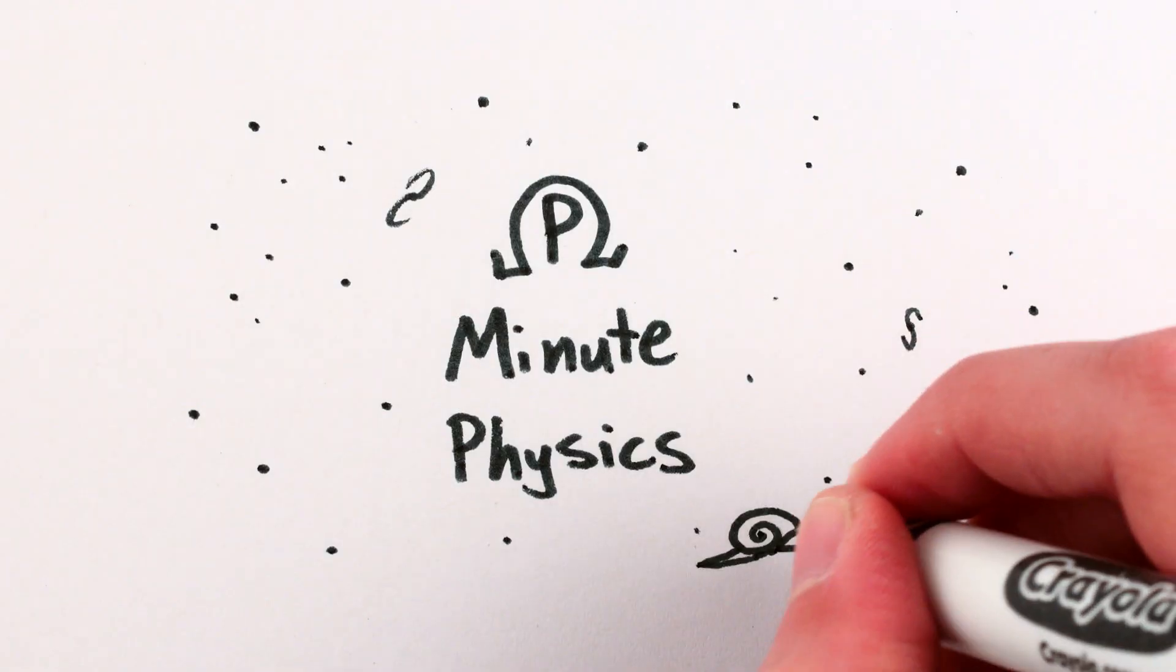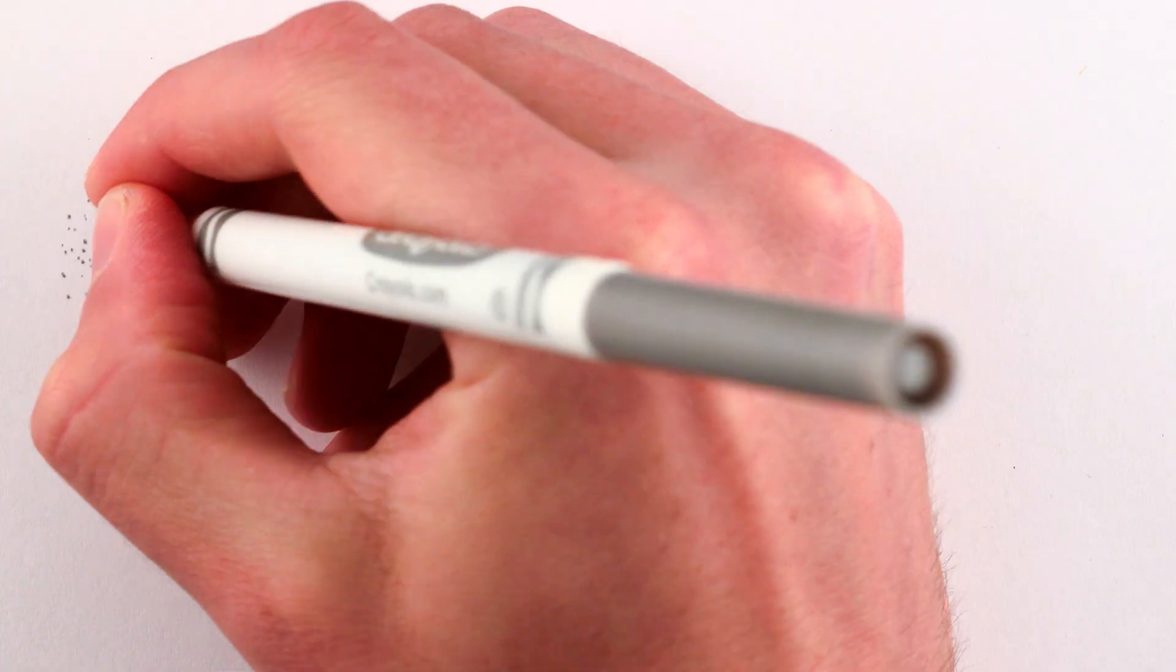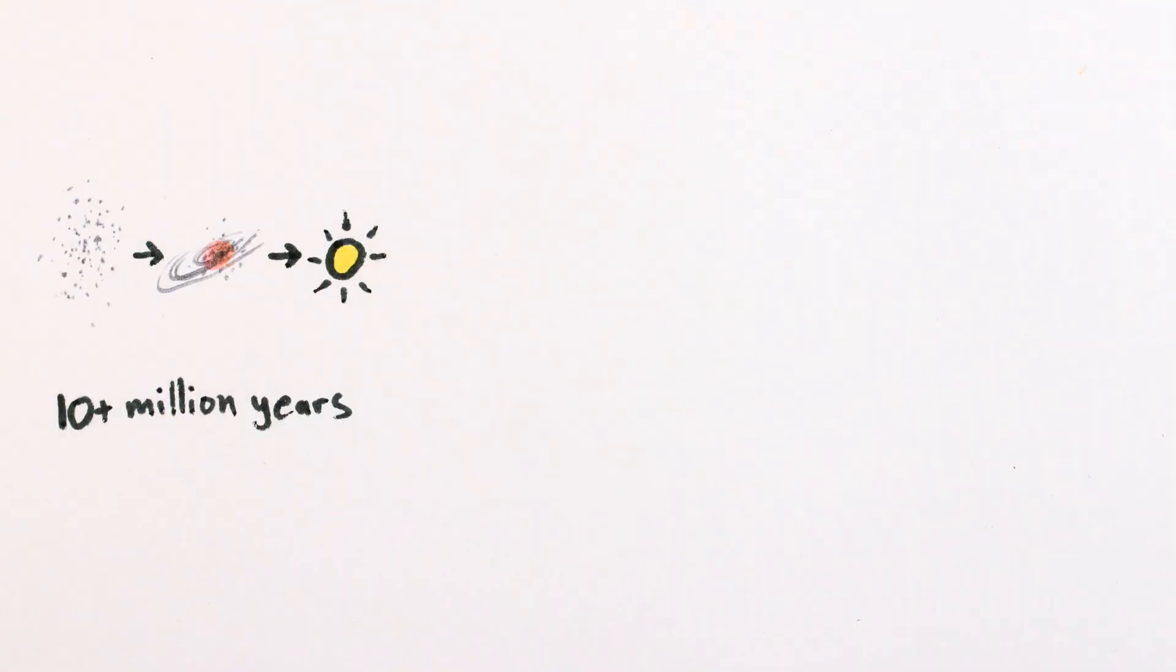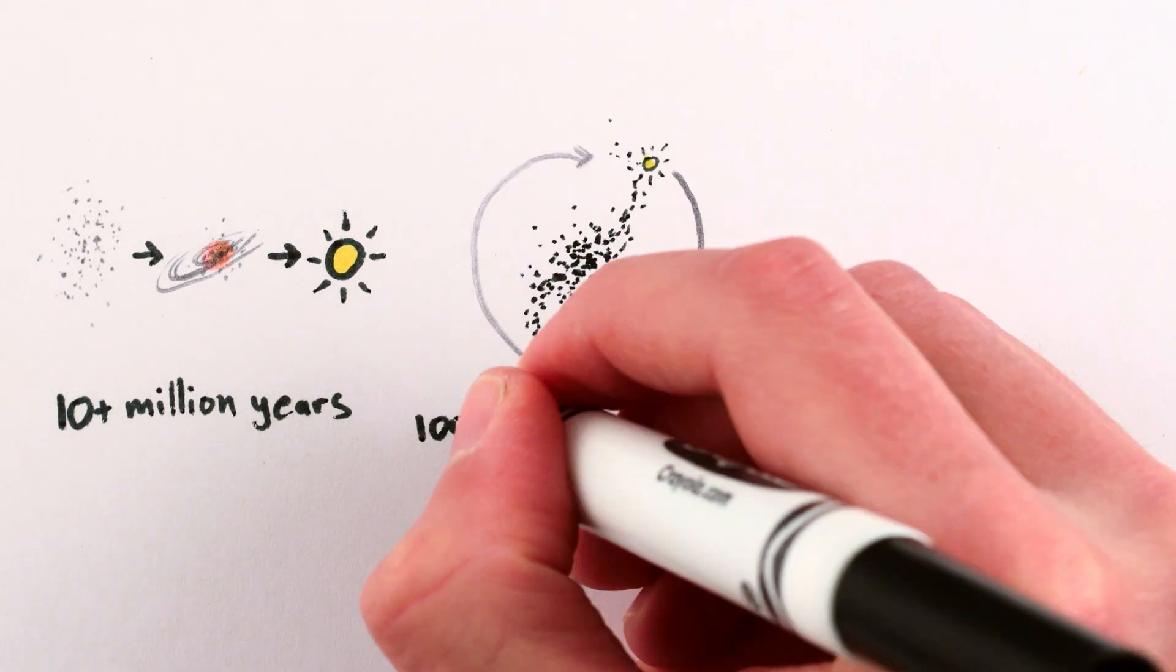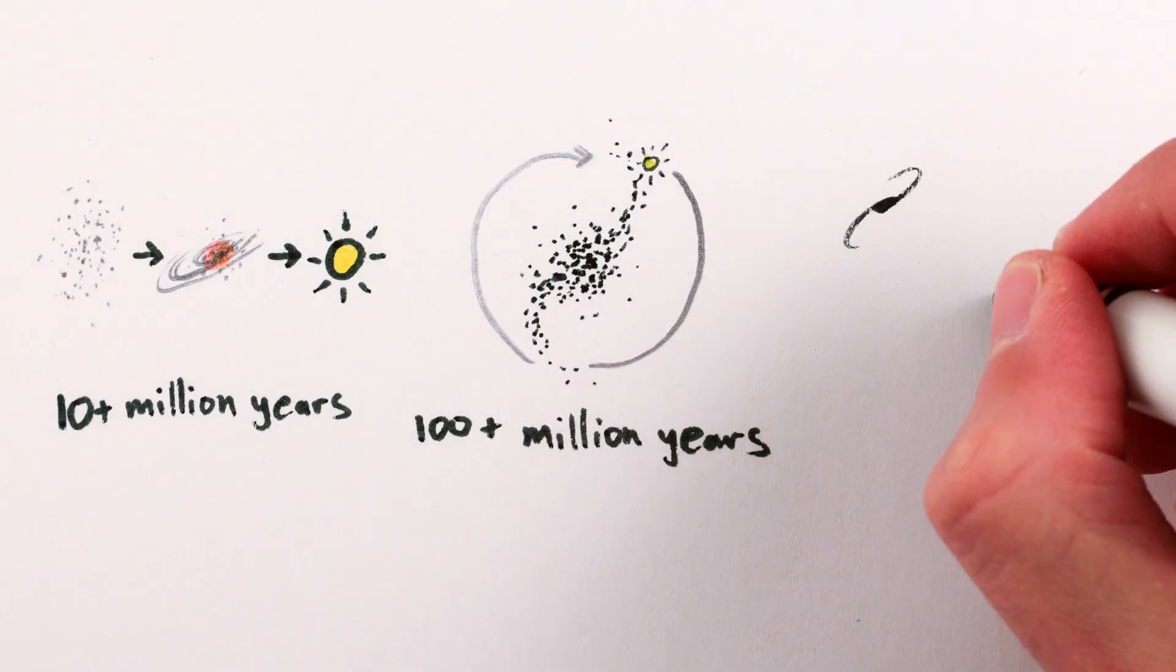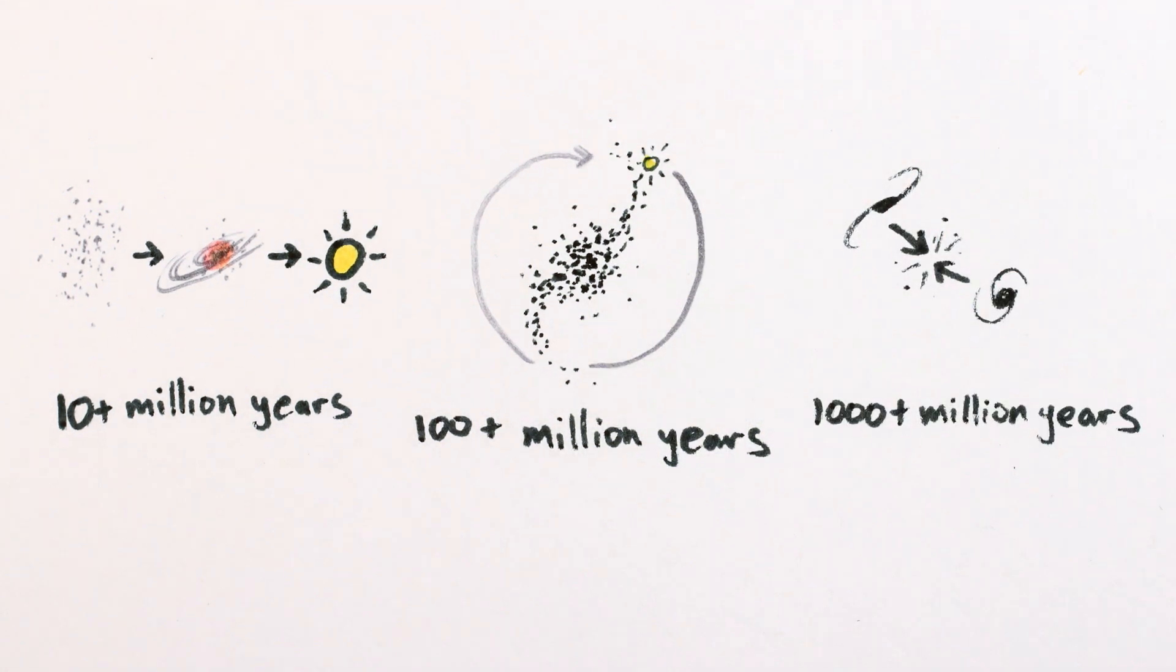Most things in the universe happen too slowly for us to see them happening. Stars like the sun take tens of millions of years to form, and hundreds of millions of years to orbit their galaxies, and colliding galaxies take billions of years to merge.